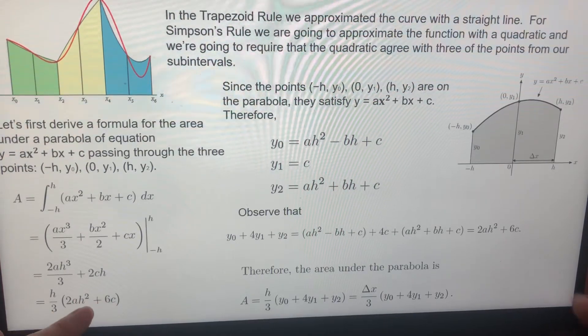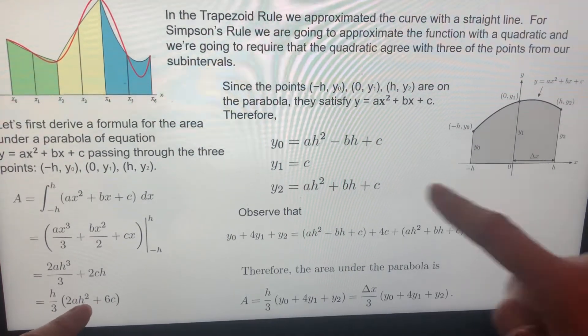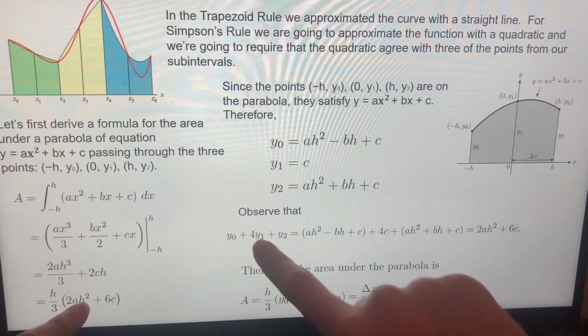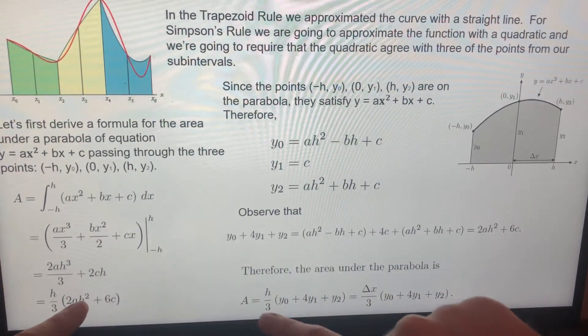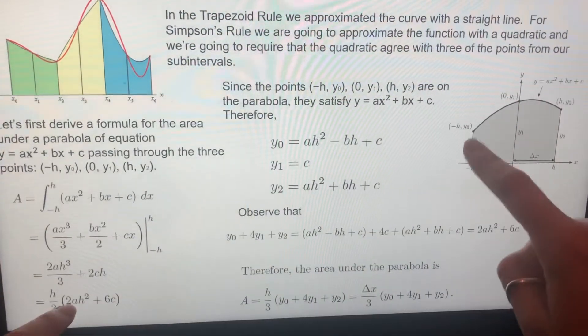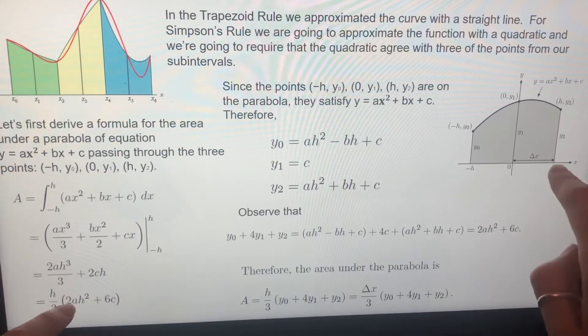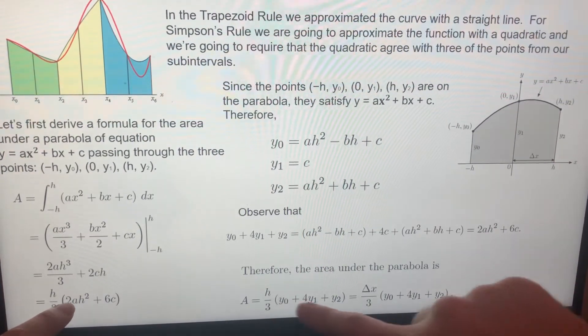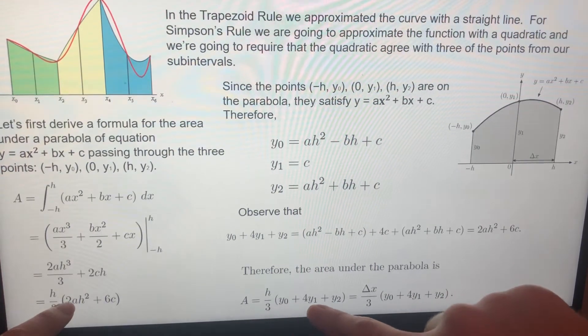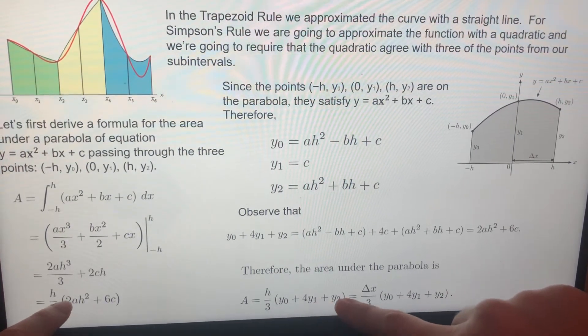So this is exactly what we found here. So instead of this expression, I am writing y zero plus four y one plus y two. Exactly. So the area of a quadratic function between minus h and h is exactly equal to that one: h over three times y zero plus four y one plus y two.